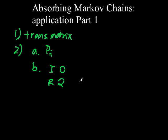Basically, this form means that if you divide the matrix a certain way, you will get an identity matrix in this corner, a matrix of zeros here, and two other matrices that do not contain only zeros. Sometimes the matrix will not be in perfect IORQ form, so you will need to rearrange it.